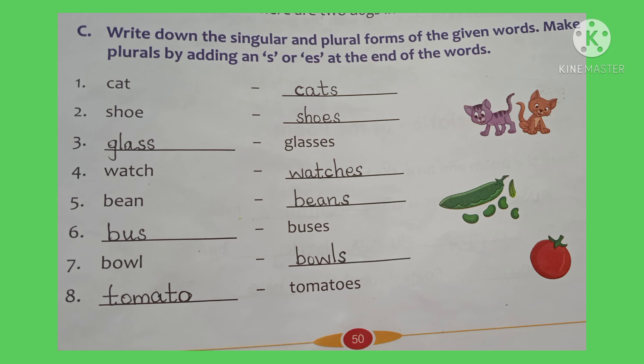The third one is Glass → Glasses, because the word Glass ends with SS. So we add ES: G, L, A, S, S + ES = Glasses. The fourth one is Watch → Watches. The word Watch ends with CH, so we add ES: W, A, T, C, H + ES = Watches.